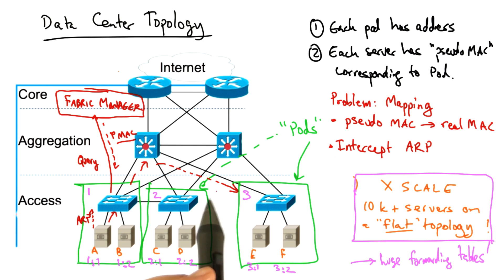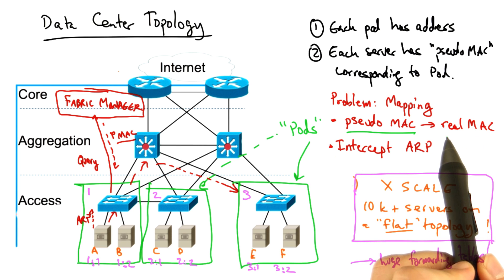Once the frame reaches the destination pod, let's say in this case, pod three, the switch at the top of that pod can then map the pseudo MAC address back to the real MAC address. And the server that receives the frame receives an ethernet frame with its real destination MAC address. So it knows that the ethernet frame was intended for it.